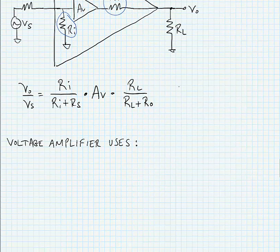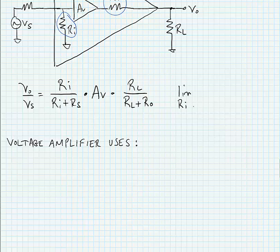Now in the limit when RI goes to infinity and RO goes to zero, for our transfer function this becomes just AV, just the voltage gain.